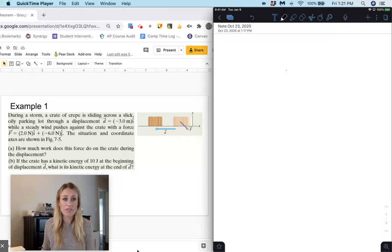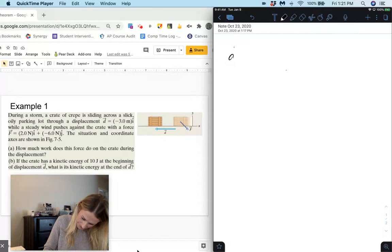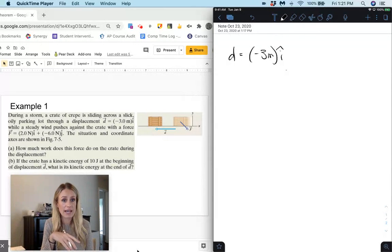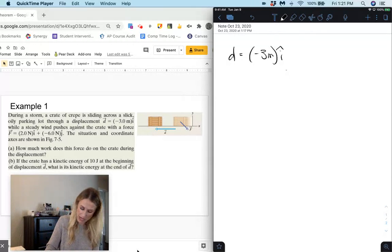So we have, during a storm a crate of crepe is sliding across a slick oily parking lot through a displacement d of negative 3 meters i-hat, while a steady wind pushes against the crate with a force f of 2 newtons i-hat plus negative 6 newtons j-hat.